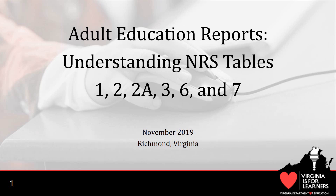This is the first of three tutorials on adult education reports. The second tutorial, coming in spring 2020, will cover NRS Tables 4, 4A, 4B, and 4C. The third tutorial, coming in late spring 2020, will cover NRS Tables 5, 5A, 8, 9, 10, and 11, and the Statewide Performance Report.